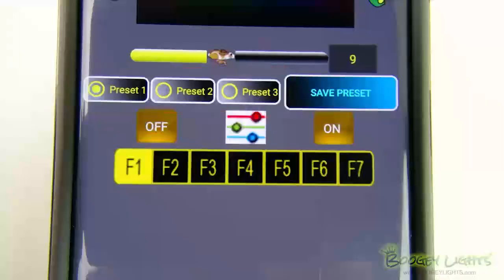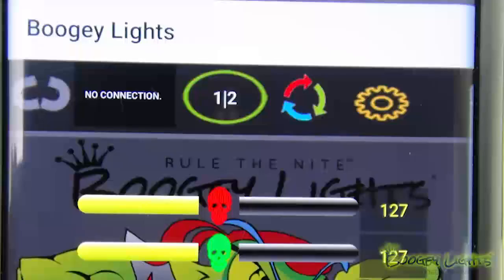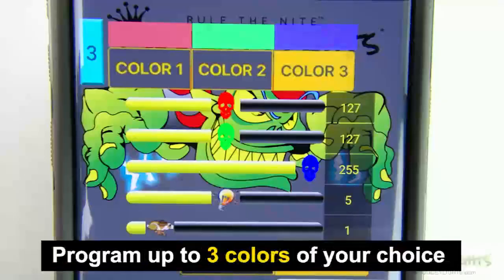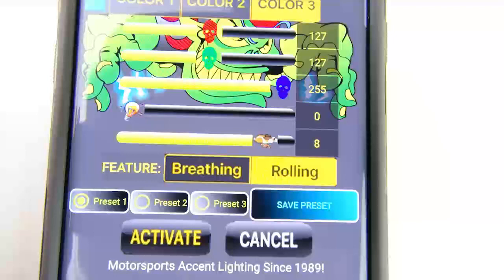There are three presets too, which allows you to save your favorite settings. Our Bluetooth controllers also give you programmable color rotation. You can program the controller to display two or three colors of your choice, and then rotate or blend them in sequence, along with adjusting the speed and intensity. Here too, there are three presets to save your favorite configuration settings.